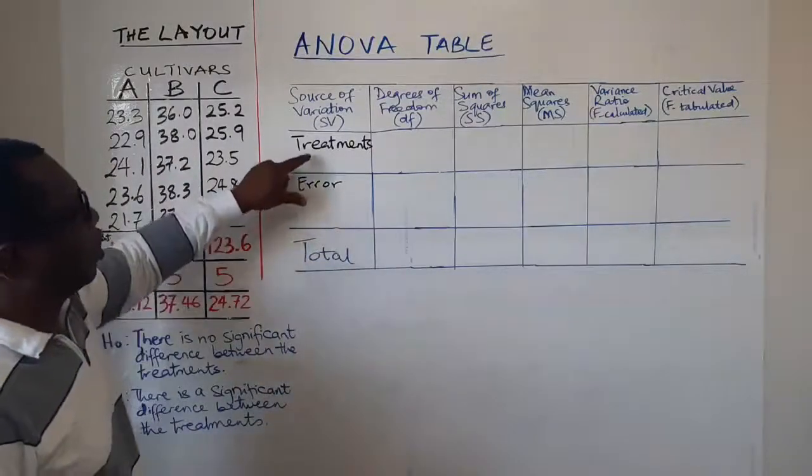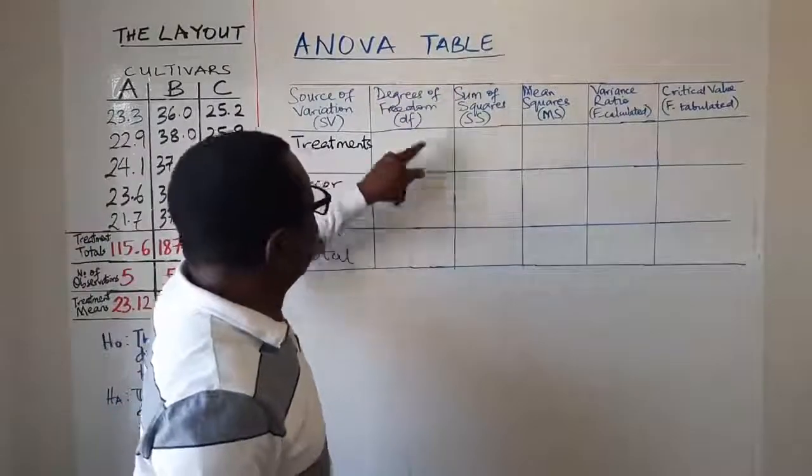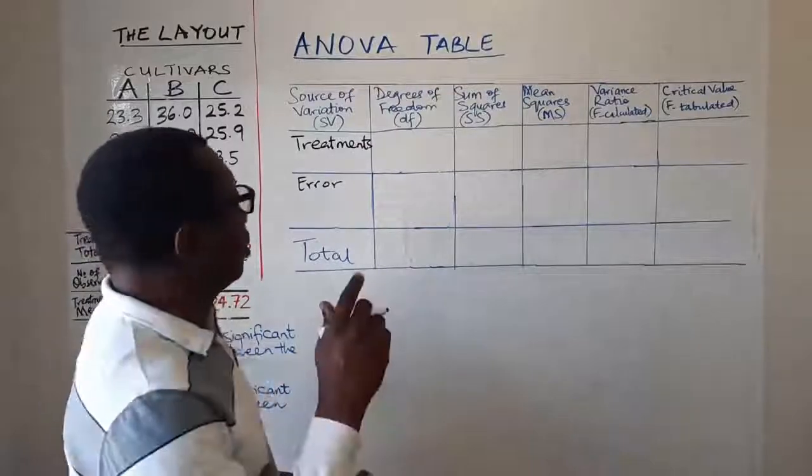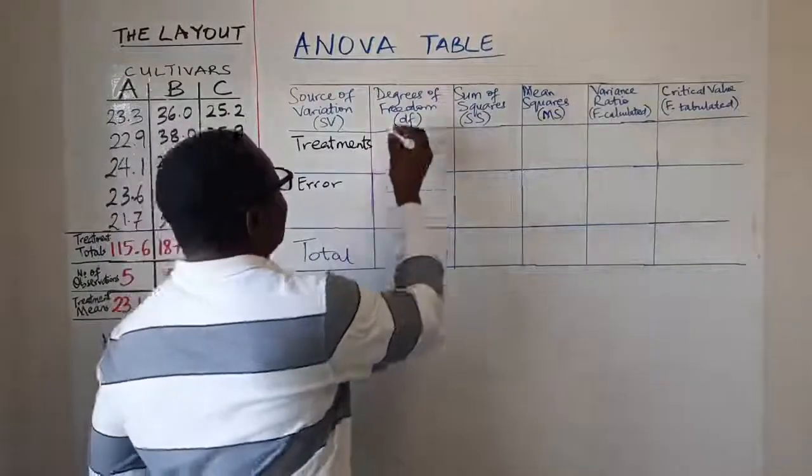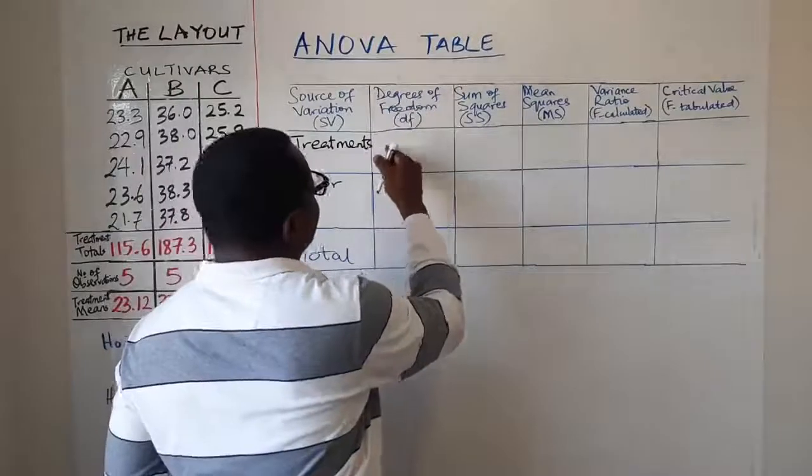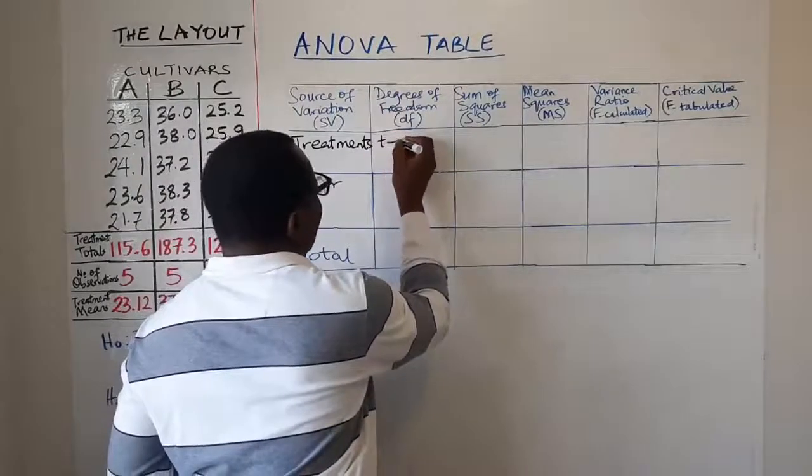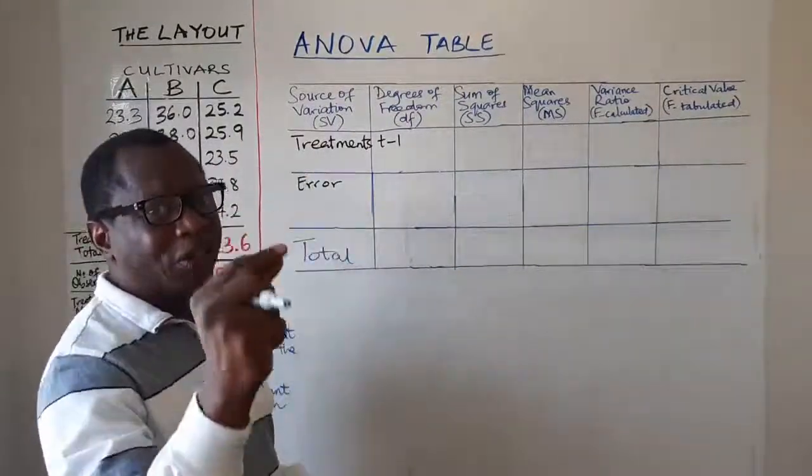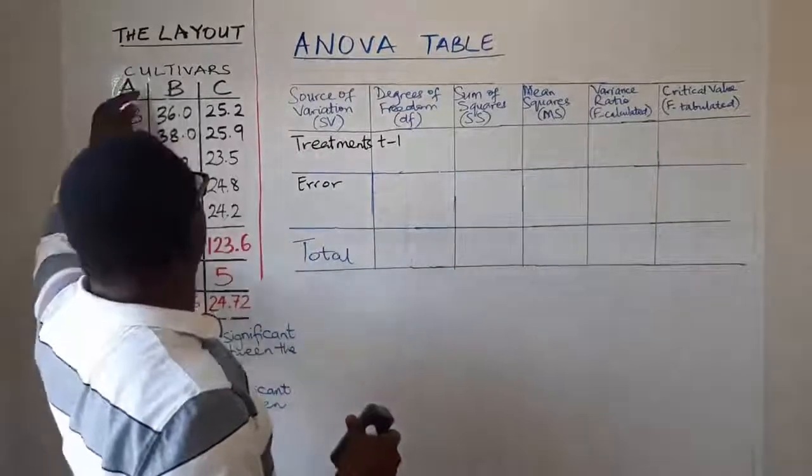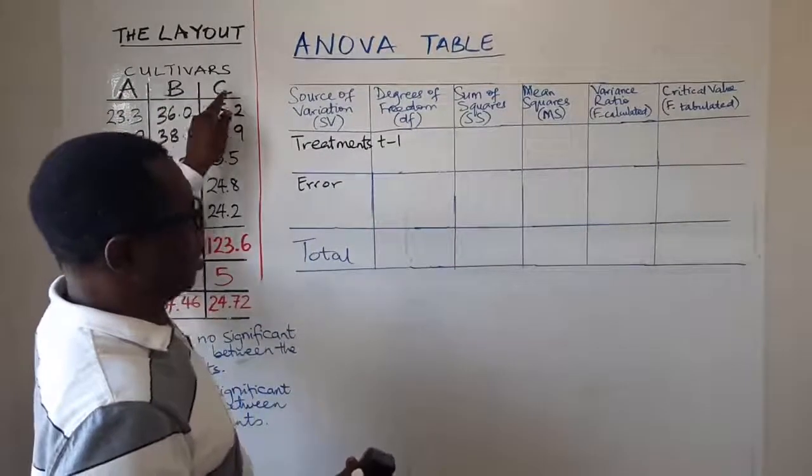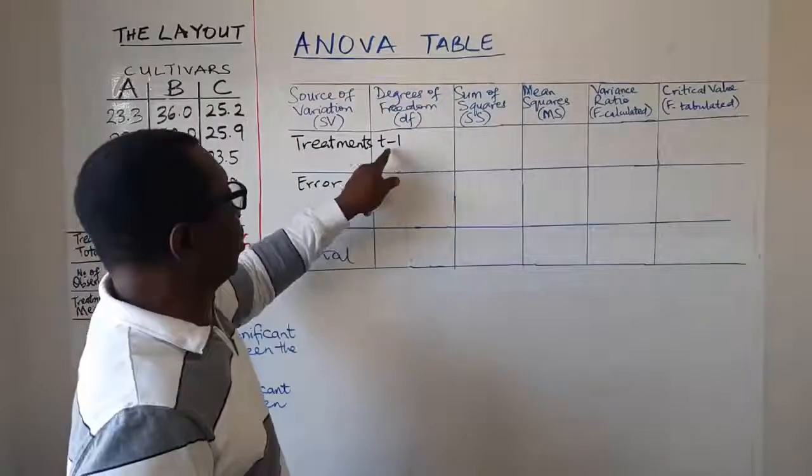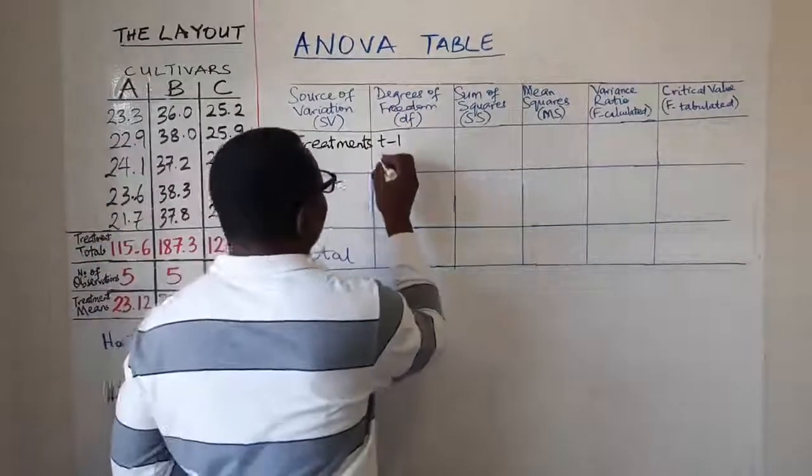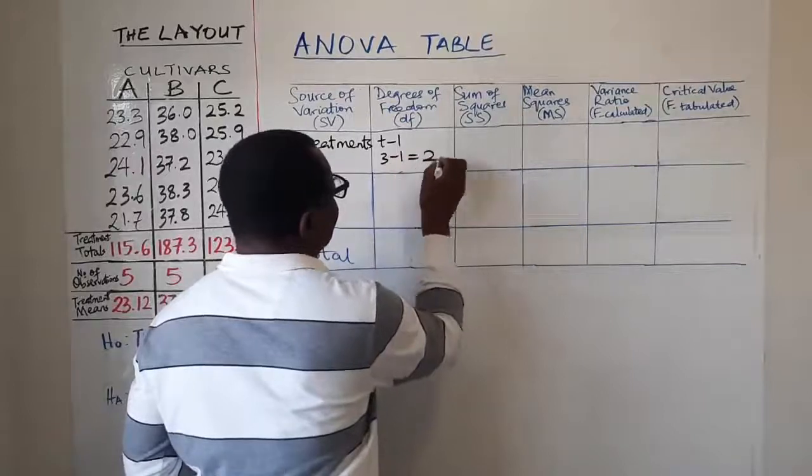Now for this table the next column is degrees of freedom column. And for the degrees of freedom we normally fill it up this way. For treatments the degree of freedom is T minus 1. Recall that in the last video we said T is the number of treatments. So in this example we have three treatments A, B and C. So our degrees of freedom will be 3 minus 1, and that will be 2.